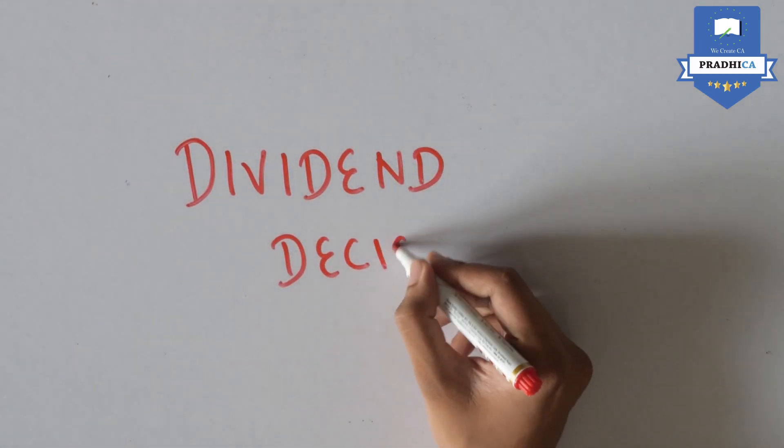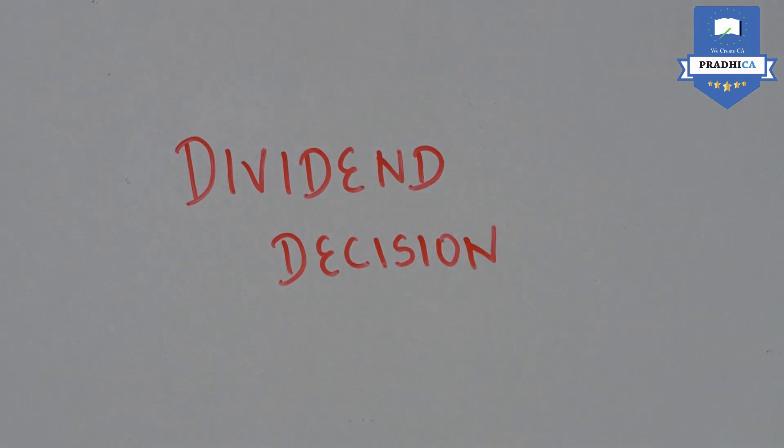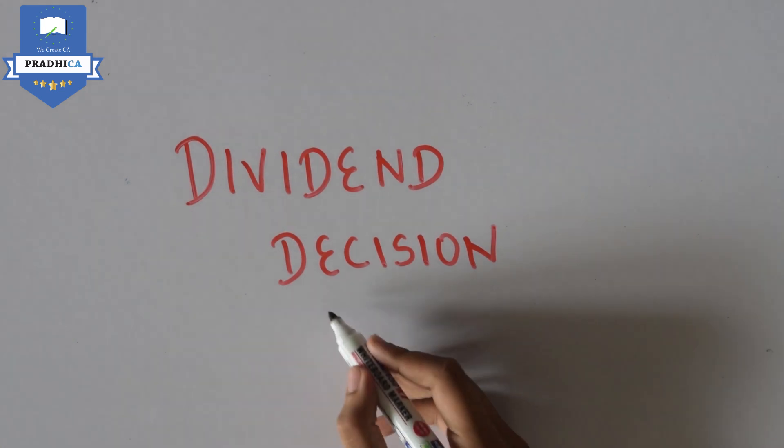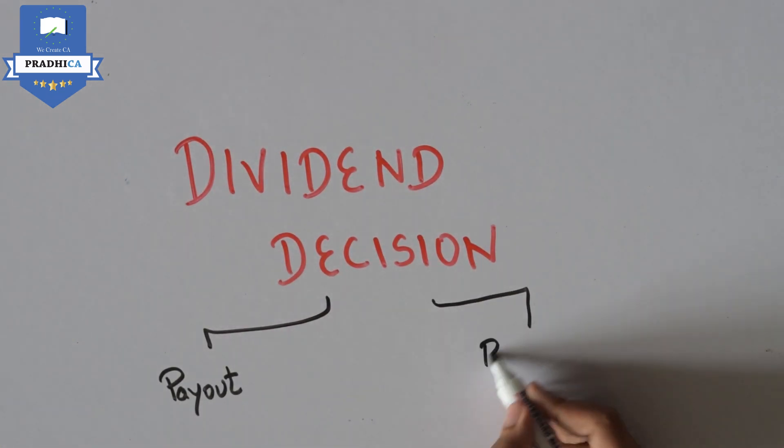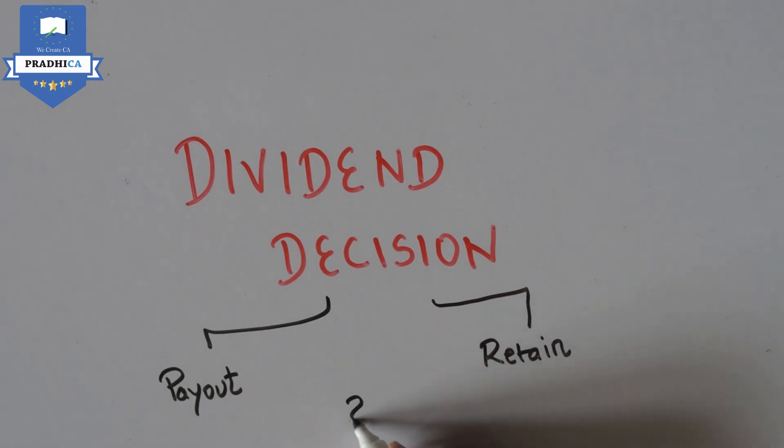Dividend Decision. Dividends are returns paid by the company to the shareholders. The main decision with respect to dividend is whether to pay out the earnings or to retain them in the business.